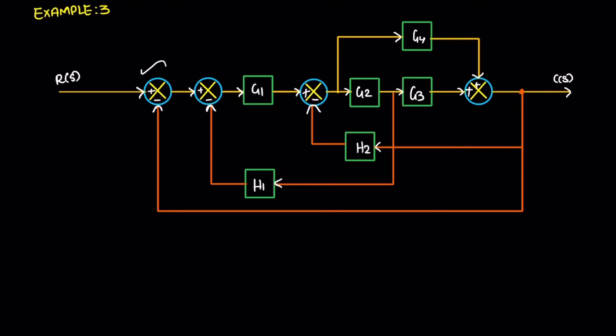Now Example 3. The transfer function T(s) equals C(s) divided by R(s). The numerator part is the forward path. This is the forward path 1. The path gain value is the product of G1, G2, and G3. Path 1 is over now.